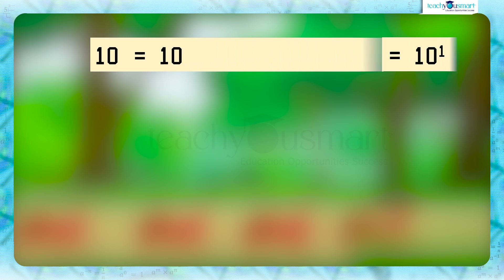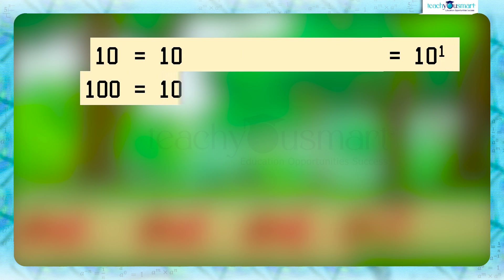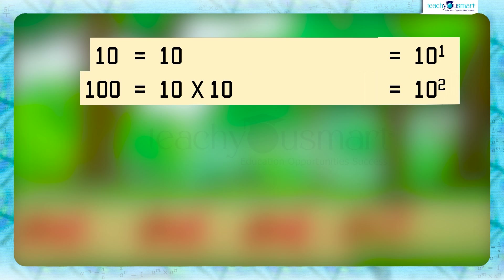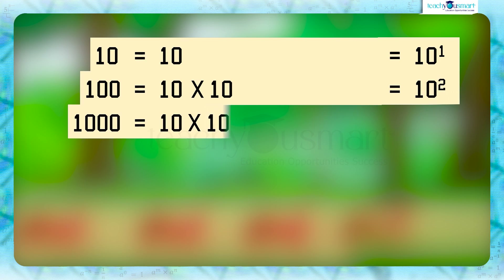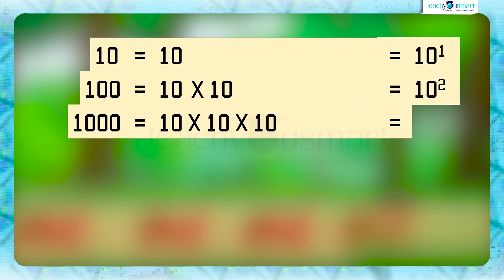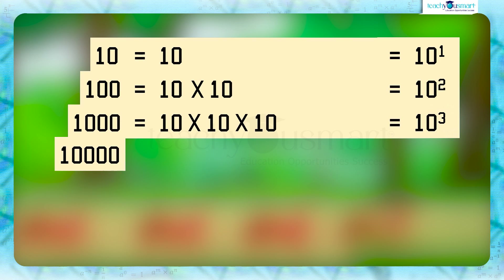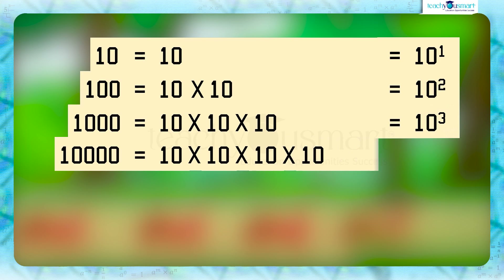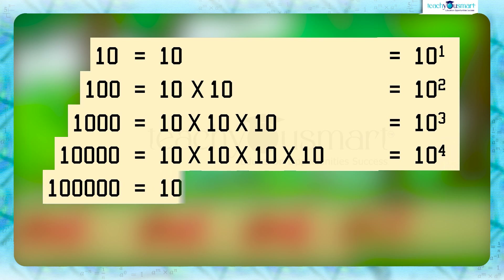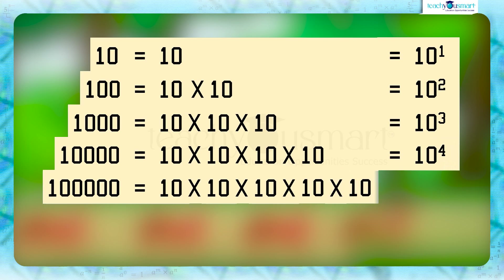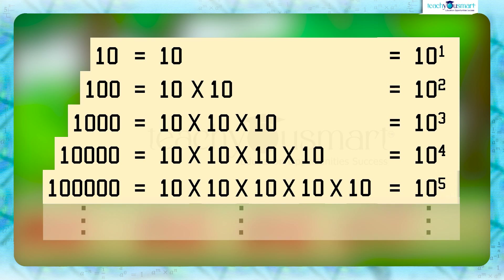Thus we can write: 10 equals 10 raised to 1; 100 equals 10 multiplied by 10 equals 10 raised to 2; 1,000 equals 10 multiplied by 10 multiplied by 10 equals 10 raised to 3; 10,000 equals 10 raised to 4; 100,000 equals 10 multiplied by 10 multiplied by 10 multiplied by 10 multiplied by 10 equals 10 raised to 5, and so on.